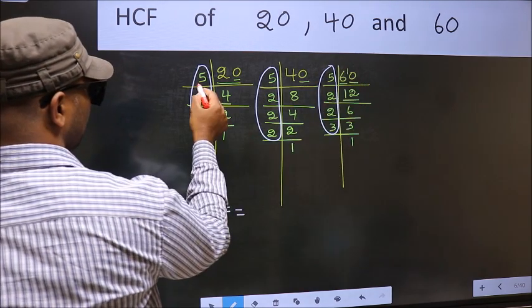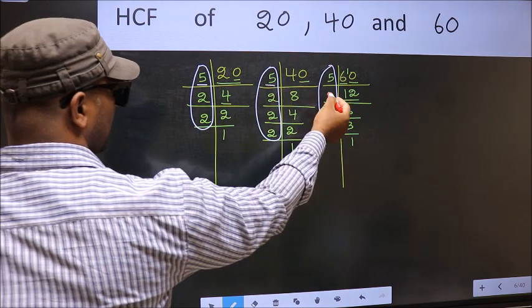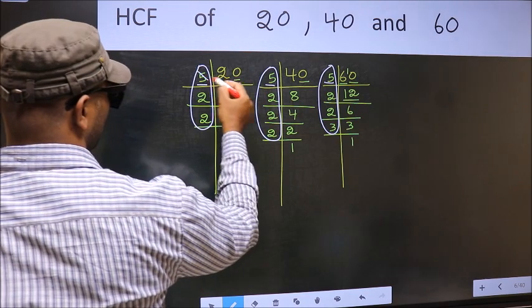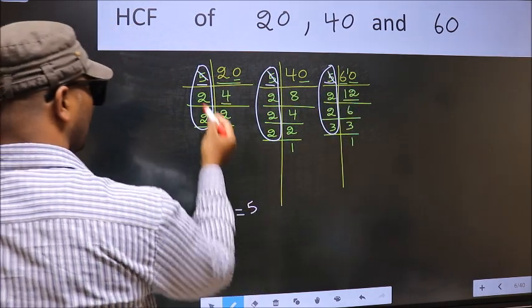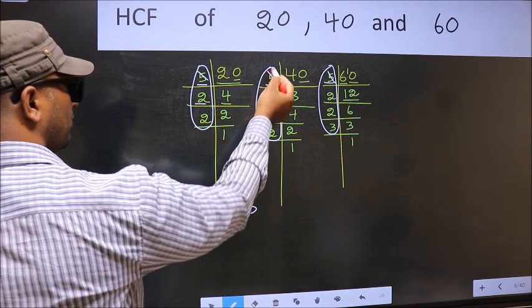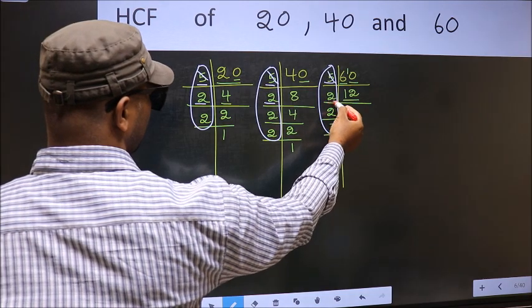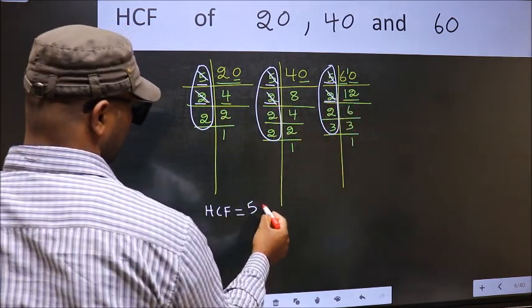Starting with the number 5. Do we have 5 here? Yes. Go to the next place. Do we have 5 here? Yes. So cut 5 right here. Next number 2. Do we have 2 here? Yes. Go to the next place. Do we have 2 here? Yes. So cut 2 right here.